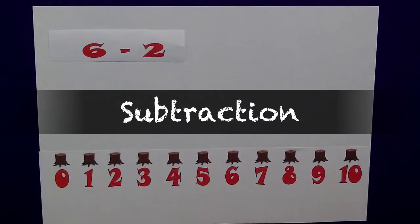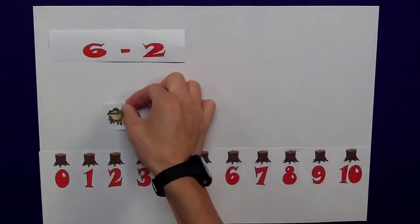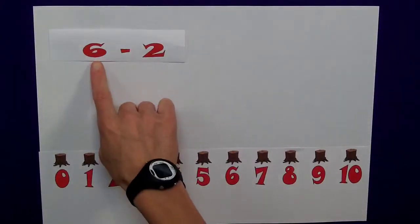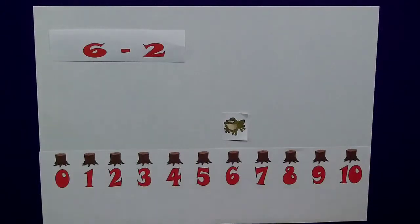Then, subtraction this time, works in a very similar way, but Freddie here will be jumping down the number line. Our starting point in this question is at 6, I'll cover up the number line, pause the clip, see how you get on.